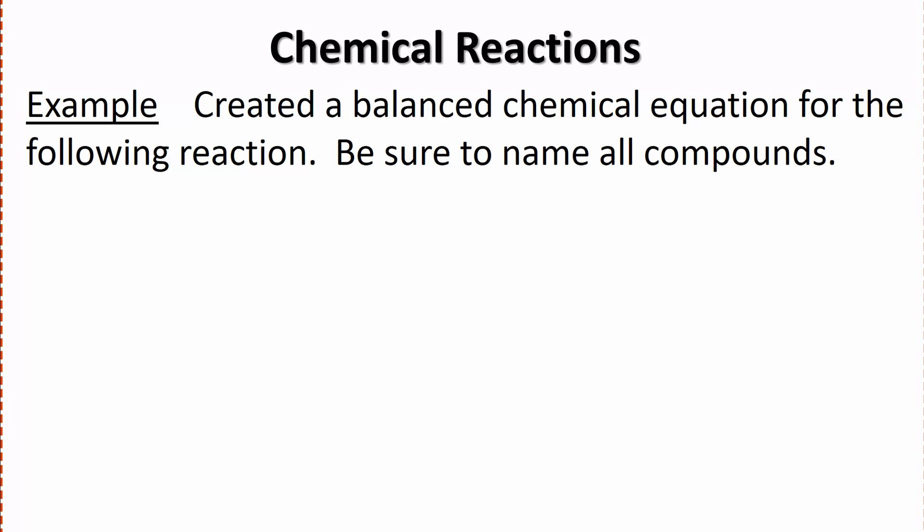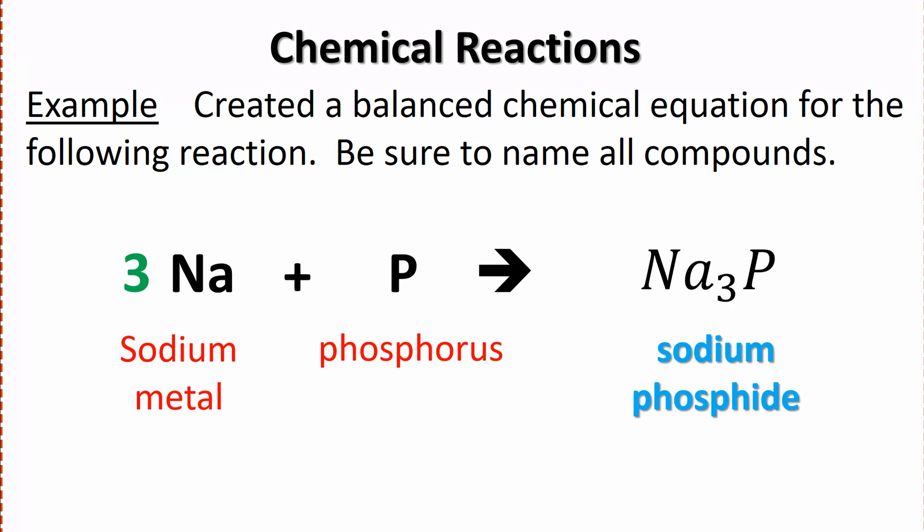Let's create a balanced equation for the following. Be sure to name all compounds. We've got sodium plus phosphorus. We've got sodium with a charge of plus one, and phosphorus has a charge of minus three. So how many sodiums are we going to get? We're going to get three of them. How many phosphorus? It looks like we're just going to get one. So this is going to be the compound that we put into this spot. Then it'll be a matter of balancing. We've got three sodiums here and only one sodium there, so we put a coefficient of three in front of sodium. Then it's just a matter of naming everything: sodium metal, phosphorus, and sodium phosphide.